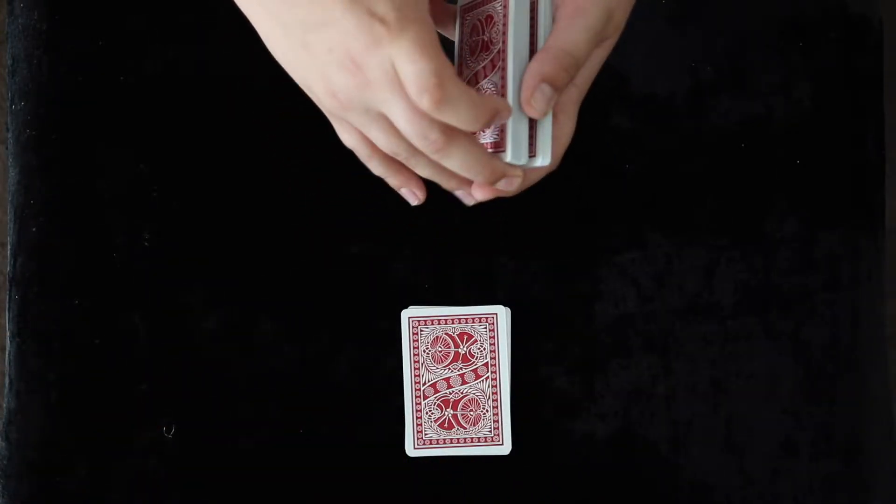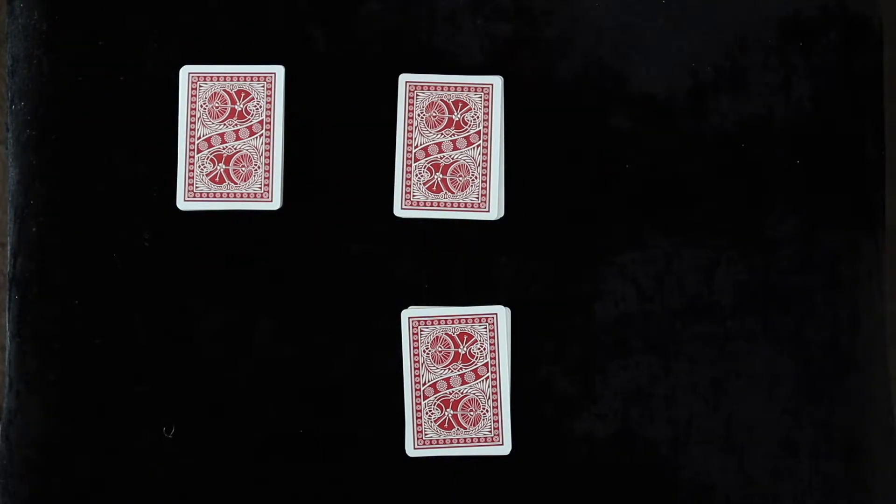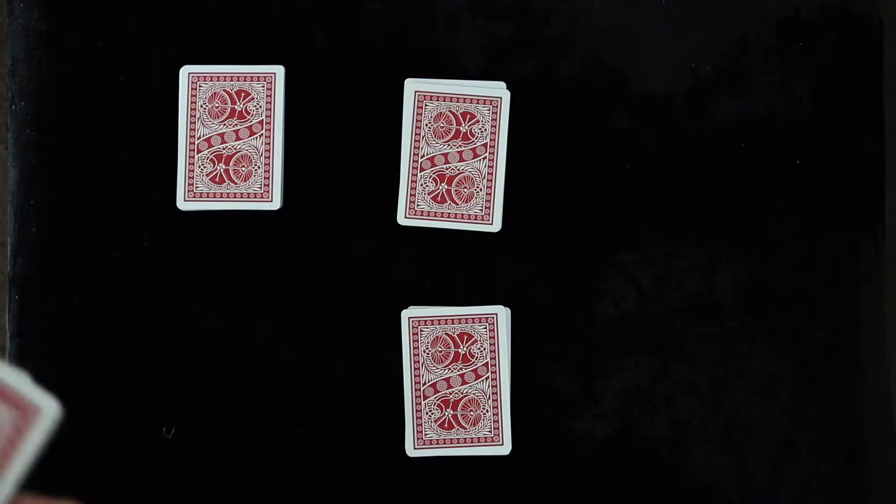Now, I'm going to take a larger packet, put it to the side. Now, I want you to take half of this small packet and shuffle it. After you've shuffled it, remember the bottom card.